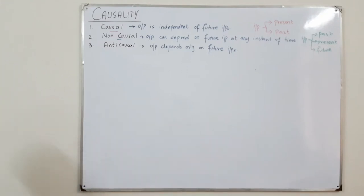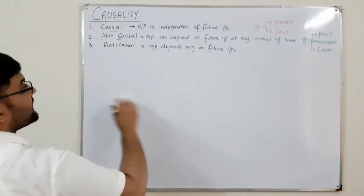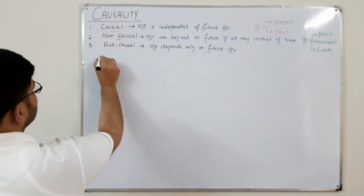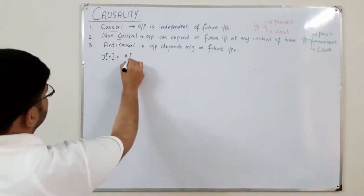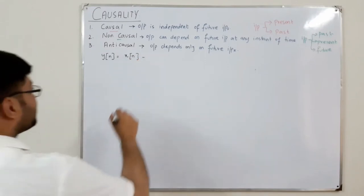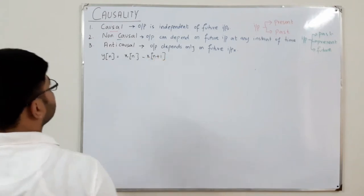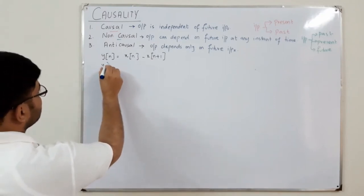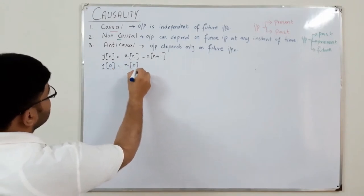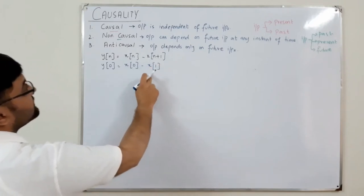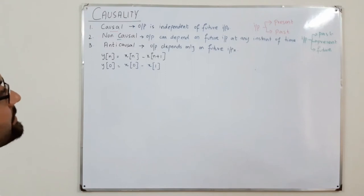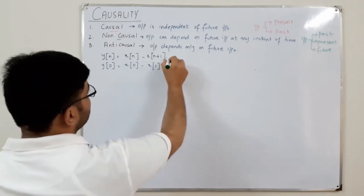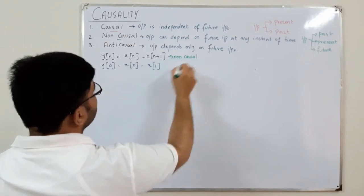Starting with examples: y[n] = x[n] - x[n+1]. Checking at n = 0, we get y[0] = x[0] - x[1]. Since x[1] is a future value, this system is non-causal.